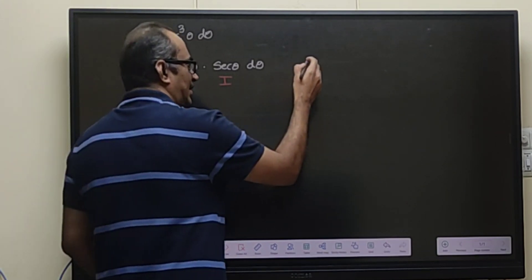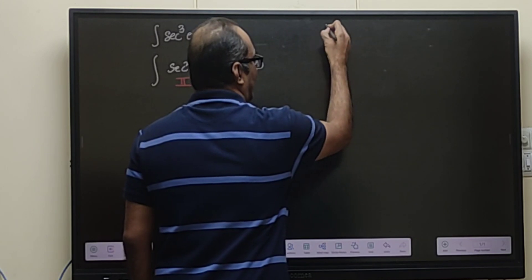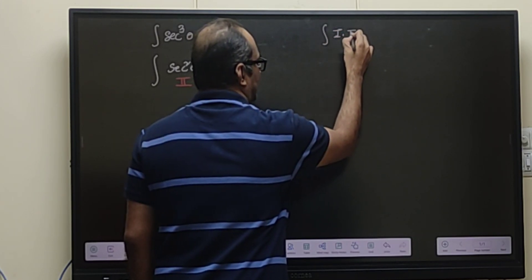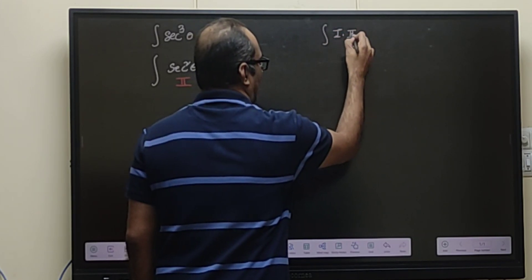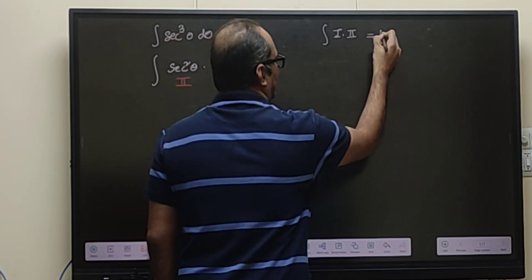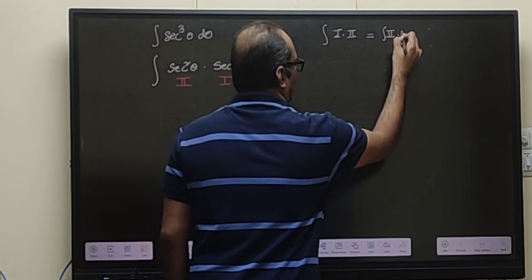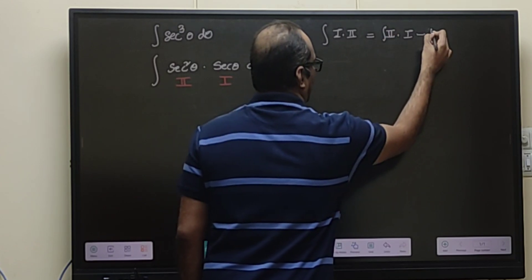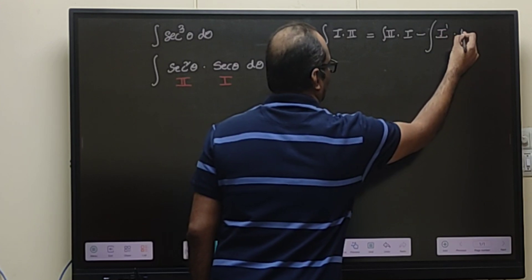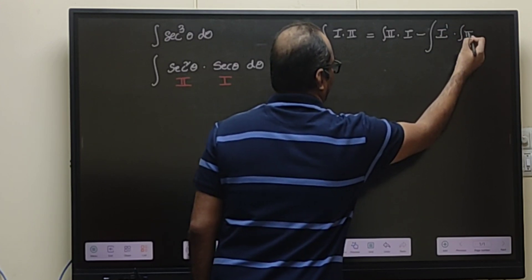What is the formula for integration by parts? It says that the integral of a first function multiplied with a second function is: integral of the second function multiplied with the first function, minus the integral of the derivative of the first function multiplied with the integral of the second function.